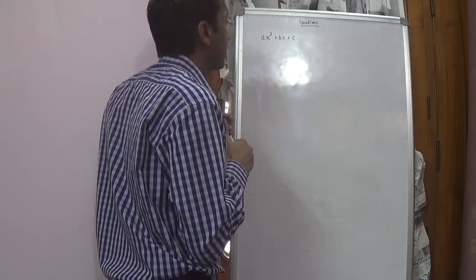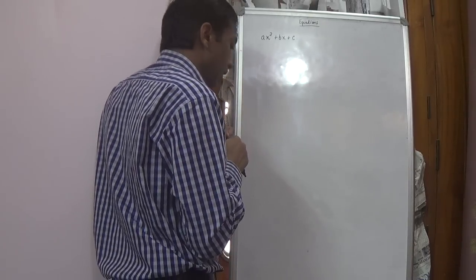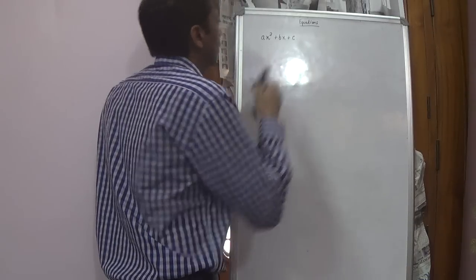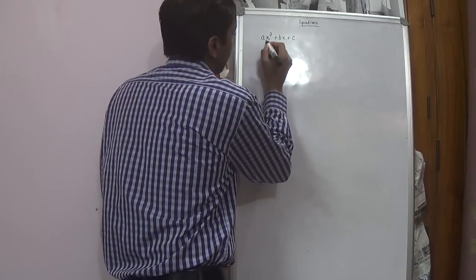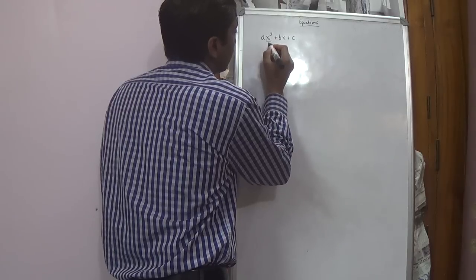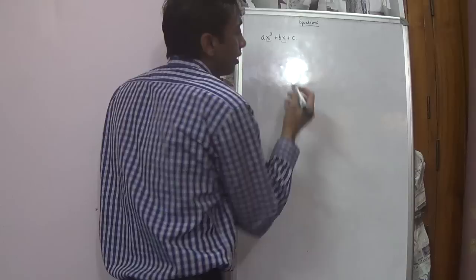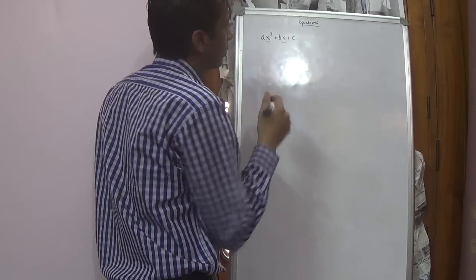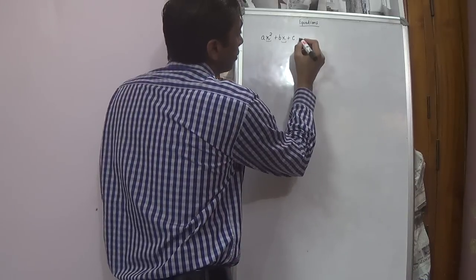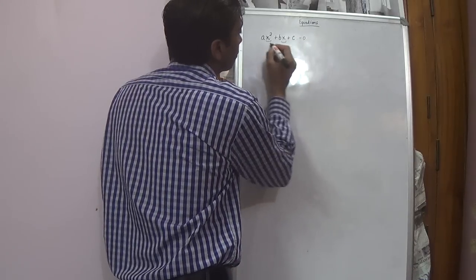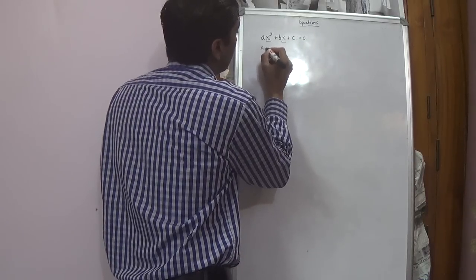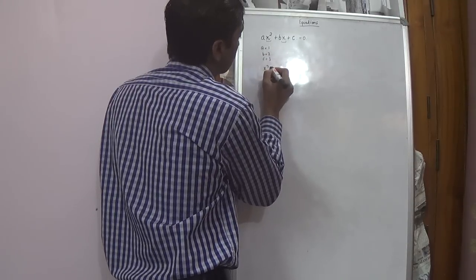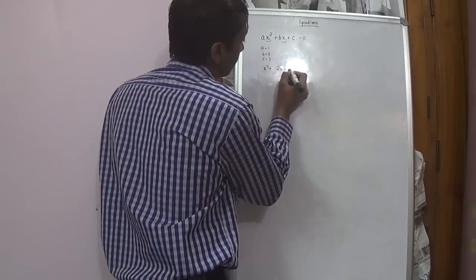First of all, what is the equation AX square plus BX plus C, where X is a variable. There would be roots to this equation, or in layman terms there would be a particular value of X for which this equation would satisfy. Let us say if A is equal to 1, B is equal to 2, C is equal to 3, then the equation would be X square plus 2X plus 3.